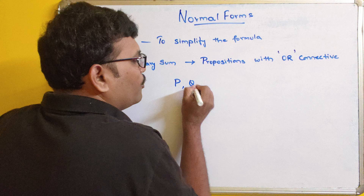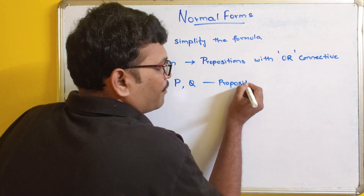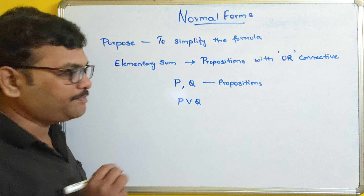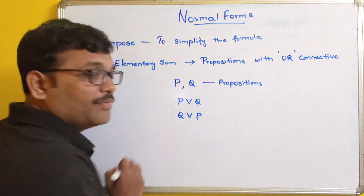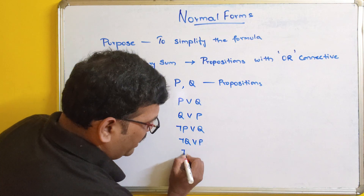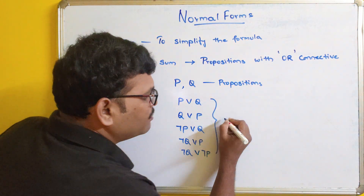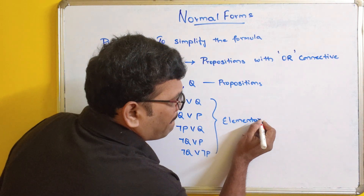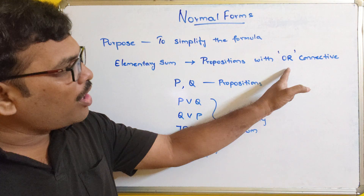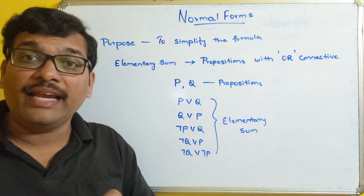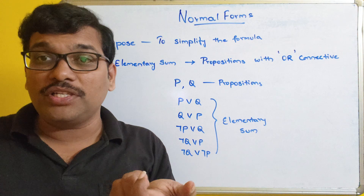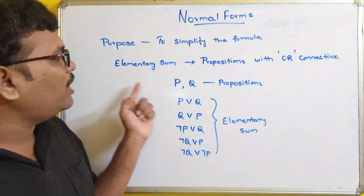For example, let P and Q be propositions. We can say P or Q is an elementary sum. Q or P is also an elementary sum. Negation P or Q, negation Q or P, negation Q or negation P — all these come under elementary sum. Because the propositions and their negations are connected with OR, that means disjunction. If those propositions are connected with a disjunction, then we can call it an elementary sum.